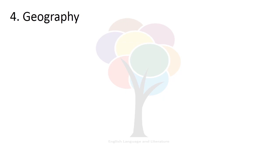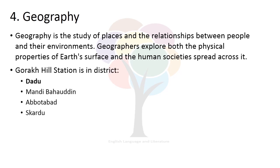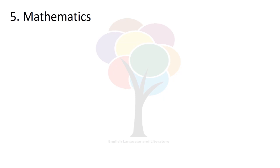The fourth module of general ability is Geography — the study of places and the relationships between people and their environments. Geographers explore both the physical properties of Earth's surface and the human societies spread across it. For example, you may be asked in the paper: 'Gorakh Hill Station is in which district?' — Dadu, Mandi Bahauddin, Abbottabad, or Skardu. The right option is Dadu. Gorakh Hill Station is in District Dadu.